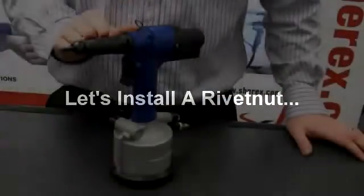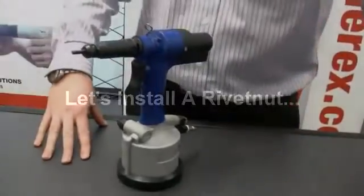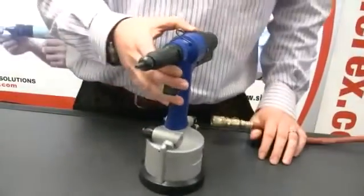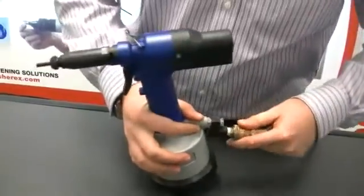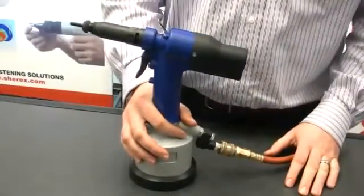Now that we have the proper nose piece on the tool for the rivet nut size you are planning to install, we will now move to setting the pulling force or pulling pressure of the tool. We'll hook up our air. We want the air pressure to be approximately 80 to 90 psi.